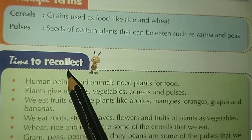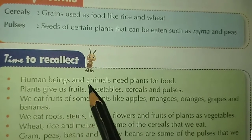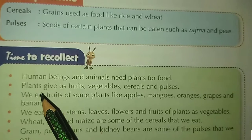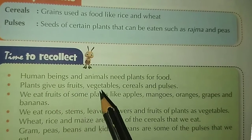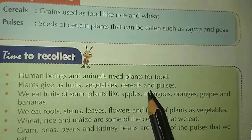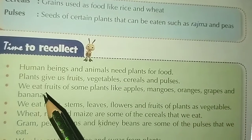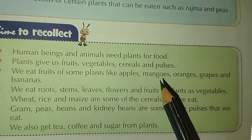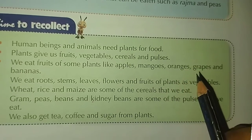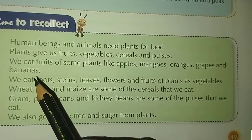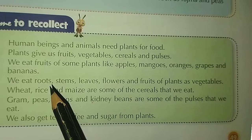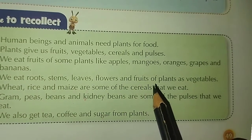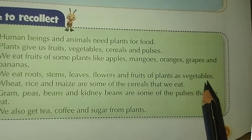To recollect: human beings and animals need plants for food. Plants give us fruits, vegetables, cereals and pulses. We eat fruits of some plants like apples, mangoes, oranges, grapes and bananas. We eat roots, stems, leaves, flowers and fruits of plants as vegetables.